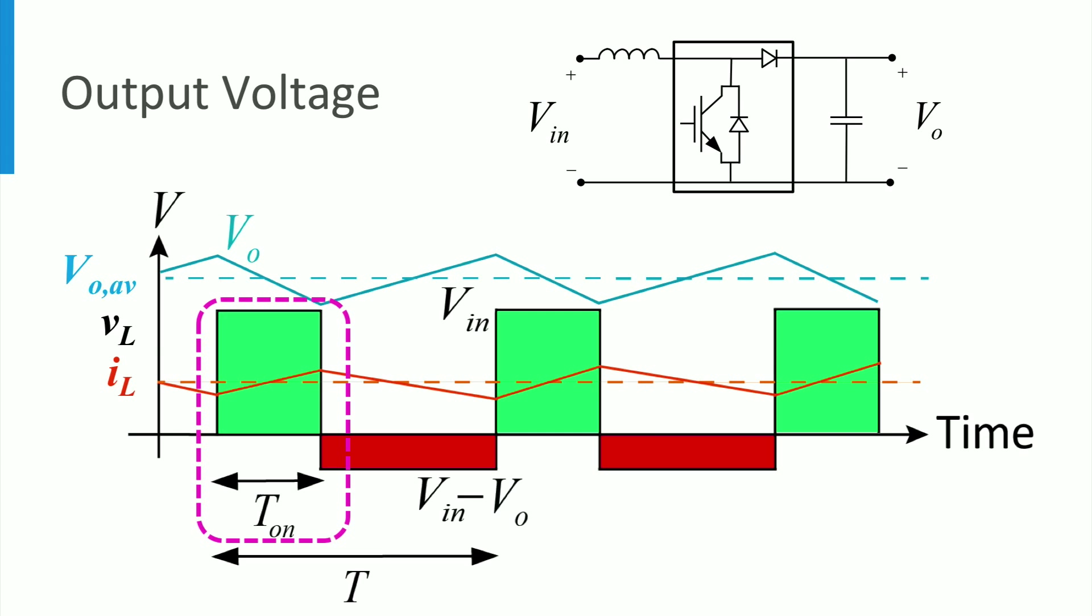During the on state of the switch, the voltage across the inductor is equal to the input voltage that is shown by the green area and the inductor current linearly increases. The capacitor supplies the load and therefore the output voltage starts to decrease.